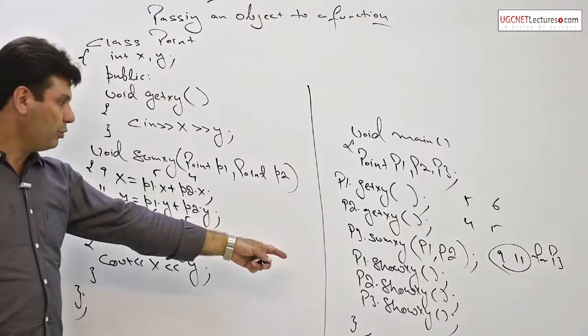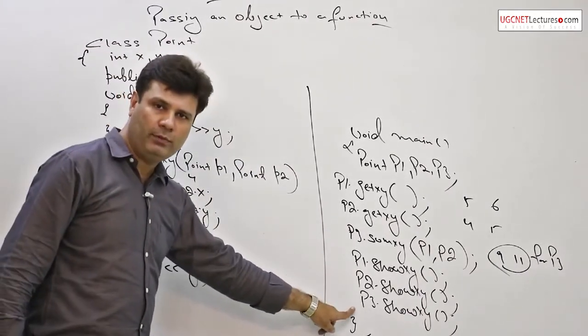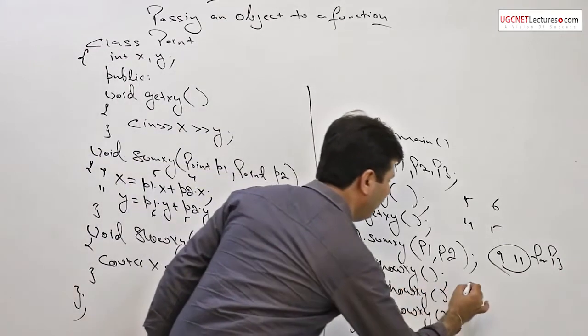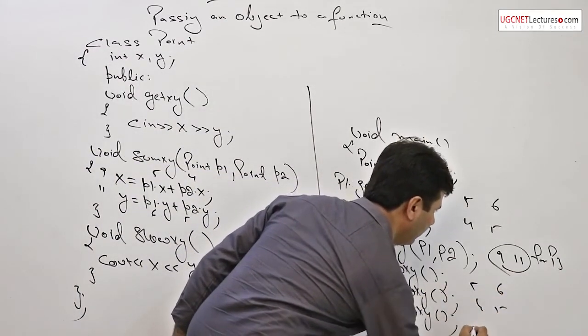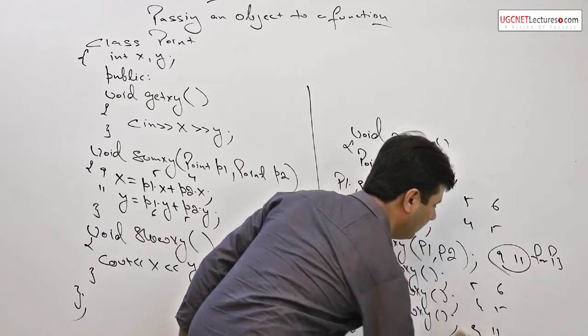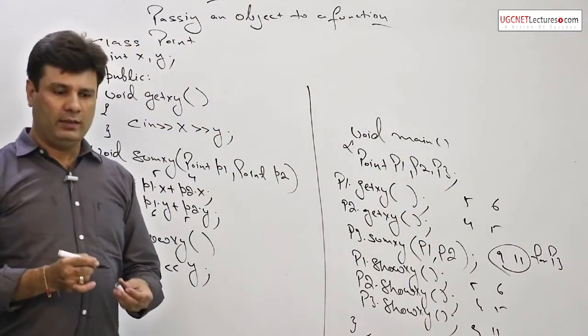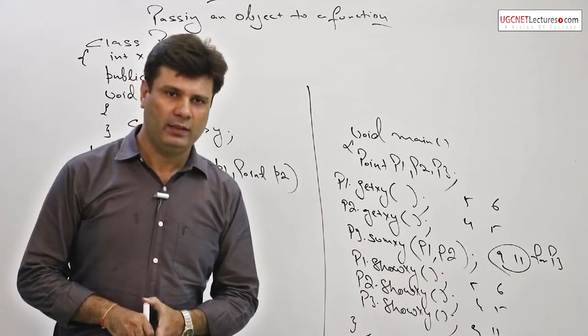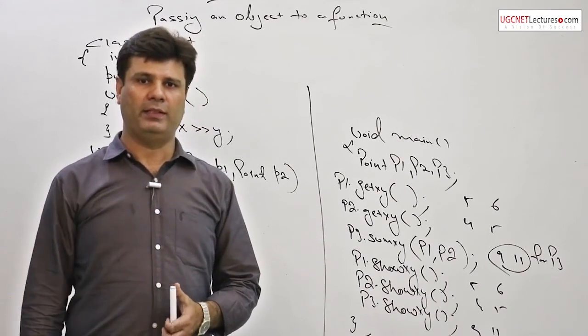By calling the function p1 dot show xy, p2 dot show xy, p3 dot show xy, we will have an output over there: 5 6, 4 5, and 9 11. In this way the objects can be passed to a function. You can try other programs by passing an object to a function.